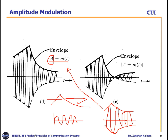If A is large enough, the envelope [A + M(t)] will not cross zero. If A is too small, the envelope crosses into the negative region and part of the signal is canceled. We must carefully select A, which plays a critical role in amplitude modulation.